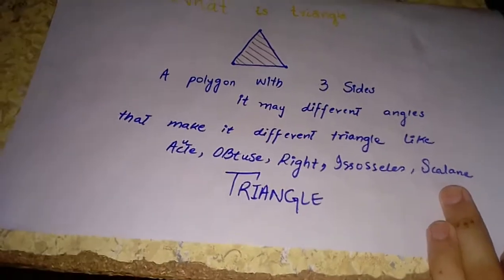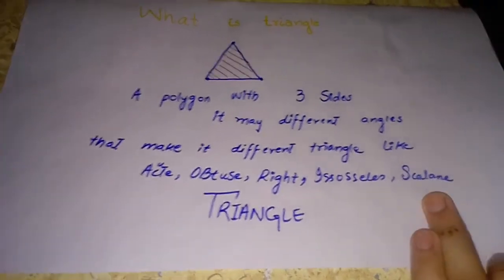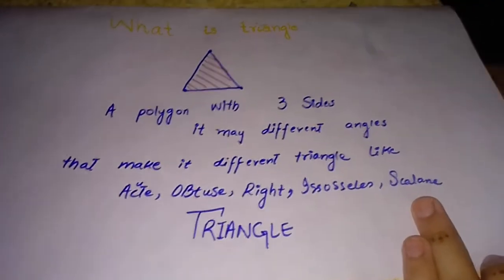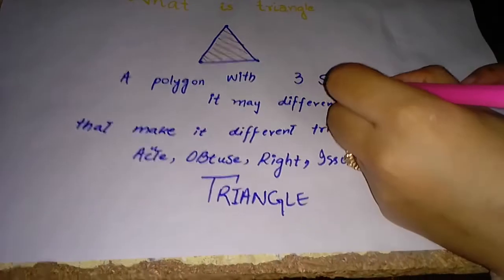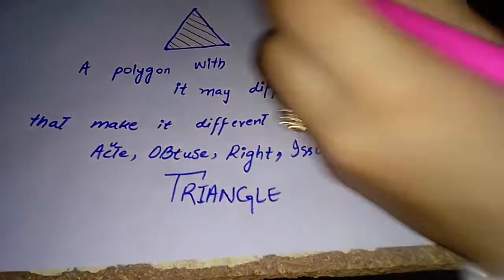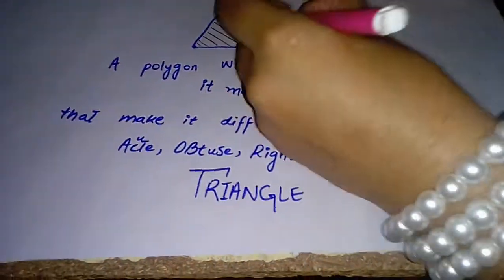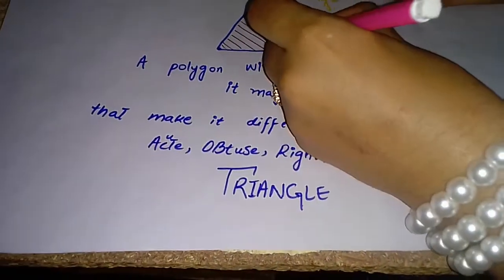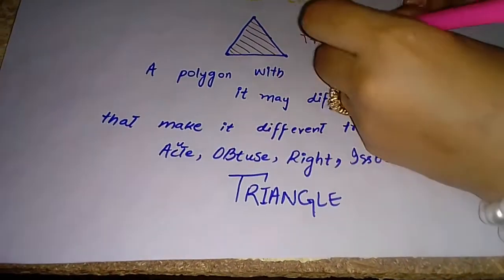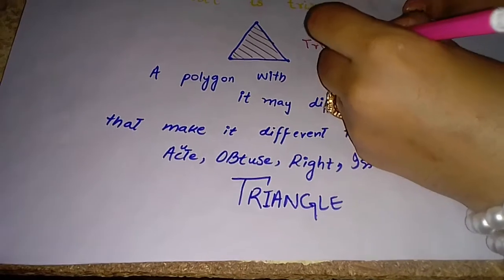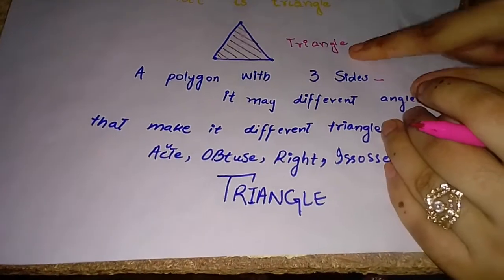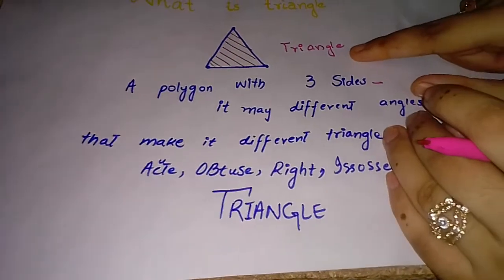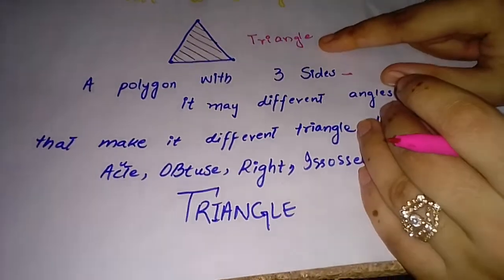What is a triangle? A polygon with three sides is called a triangle. Tri for three — tri-angle. In a triangle, there are three angles present.